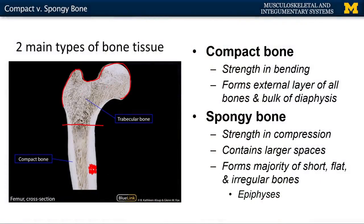Where are you going to find spongy bone? The majority of your short bones — carpal bones are examples. Flat bones, such as the majority of your skull cap or calvaria. Irregular bones, the best example being your vertebrae, or the bones that make up your spinal column. And last but not least, the epiphyses, or ends of long bones, are also made up of spongy bone.